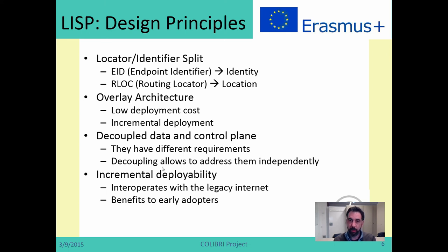EIDs are responsible for identifying the identity of a node, while RLOCs are responsible for locating the node. If you think about an IP address, it has two meanings in the current internet: it is both the identity of the node (it is unique), but it is also the way we use to reach that node — its location. You cannot change the location of an IP address without changing the identity. This is precisely what LISP is doing: splitting those two very different things — identity and location — into two different sets of addresses.